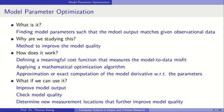Parameter optimization means we want to find the model parameters such that the model output matches given observational data. This is the main method to improve model quality, because we want to make predictions with the climate model in very many cases. So we need a high quality model. We have to define a meaningful cost function — a function that measures the misfit between the model output and the data — then apply a mathematical optimization algorithm. Many of these algorithms need the derivative of the model output with respect to the parameters.